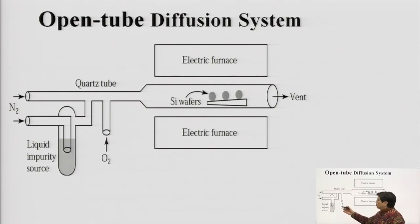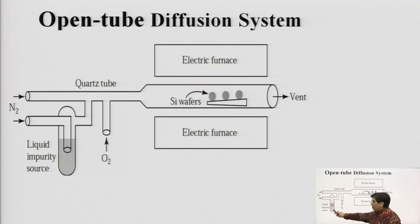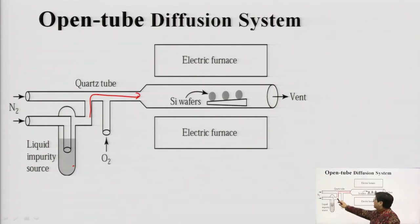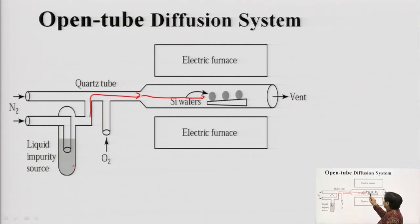Here is a zoomed view of the open tube system using a liquid impurity source. Nitrogen gas (N2) is bubbled through a quartz tube. This carrier gas controls the flow — it is bubbled through the liquid source so that, along with the dopant species, it flows over the wafers, diffuses, and comes out of the vent.